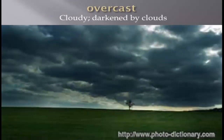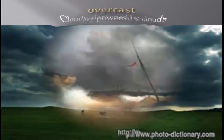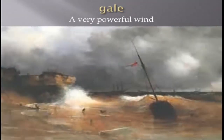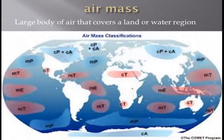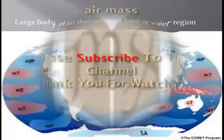Overcast: cloudy, darkened by clouds. Gale: a very powerful wind. Air mass: a large body of air that covers a land or water region.